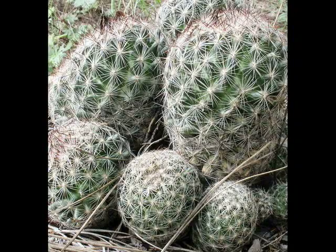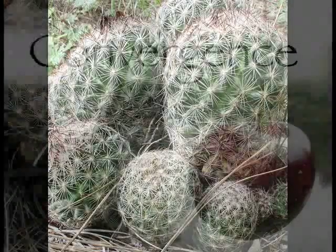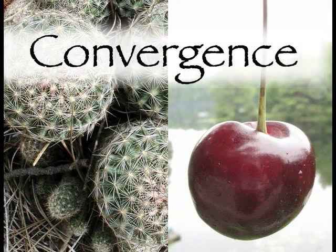Now look at this cactus. It too evolved the spherical form, and it was not descended from the melon or from the walnut. It independently found the same answer to a challenge of survival. In biology, the independent generation of similar shapes for similar functions is known as convergence.